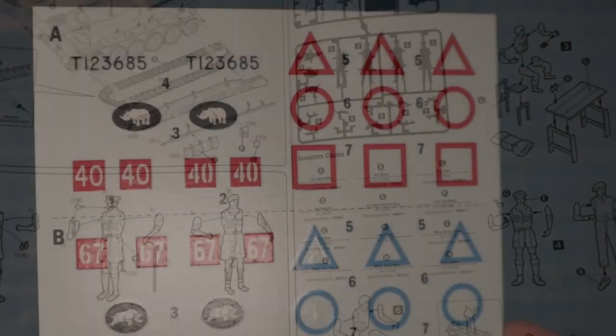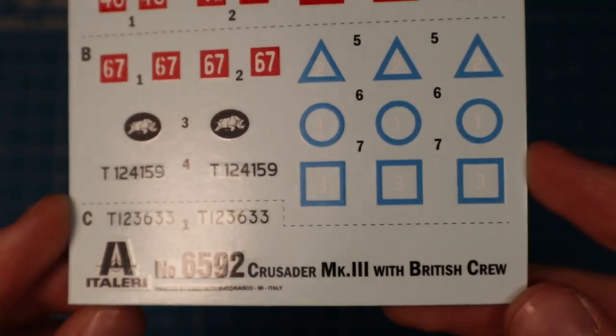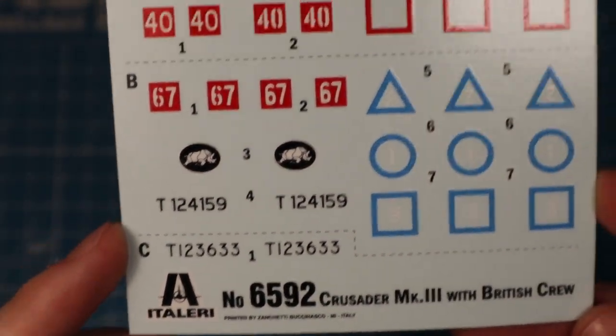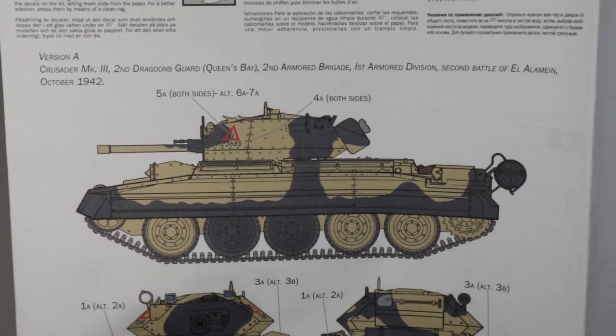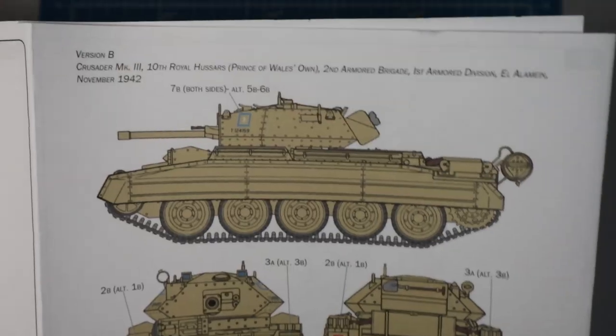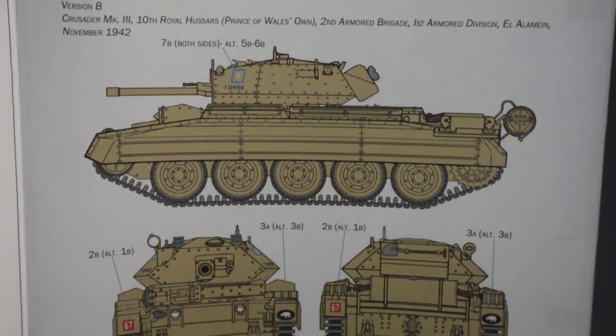But enough for the figures. The decals look good and offer you three different marking options for two camo schemes. You have a covering guide for this two-tone camo version A and two for the single color variants B and C.